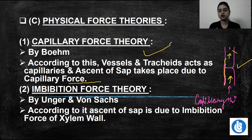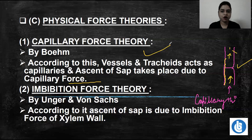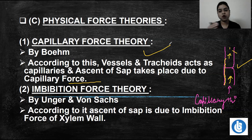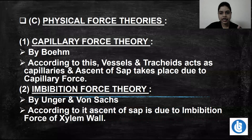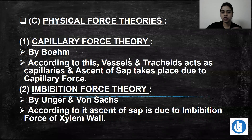It is correct that tracheids and vessels are involved in shifting water. But whether it is strictly in capillary form or by capillary force is not very proven. So this theory is not wrong, but it is not widely accepted.